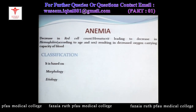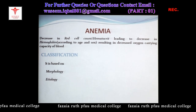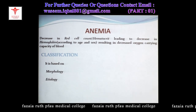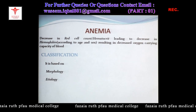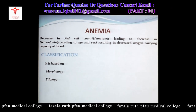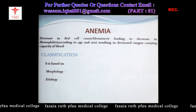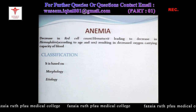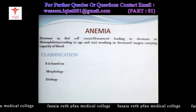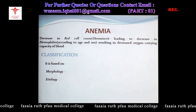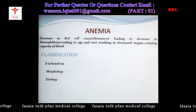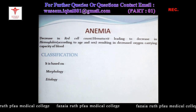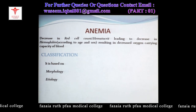The definition of anemia: it is the decrease in red cell count and hematocrit leading to decrease in hemoglobin according to age and sex, resulting in decreased oxygen carrying capacity of blood. Hematocrit is the number of RBCs per liter volume of blood — how many RBCs are present in one liter — and that results in decrease in hemoglobin.